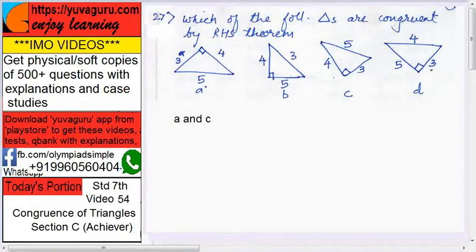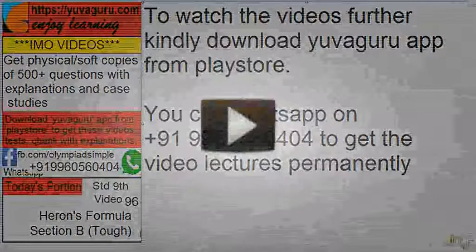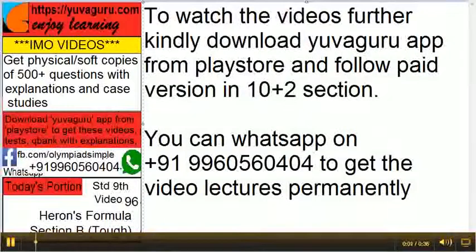Download Yuguru app from play store to get these videos, tests, question banks with explanations directly on your mobile. Get 500 plus questions with explanations and case studies on your PC - it's a separate paid version. Follow us on Facebook, WhatsApp us on this number for any query or purchases. Keep studying. Also learn tables up to 30, squares up to 30 and cubes up to 15 by heart. We have videos for that.